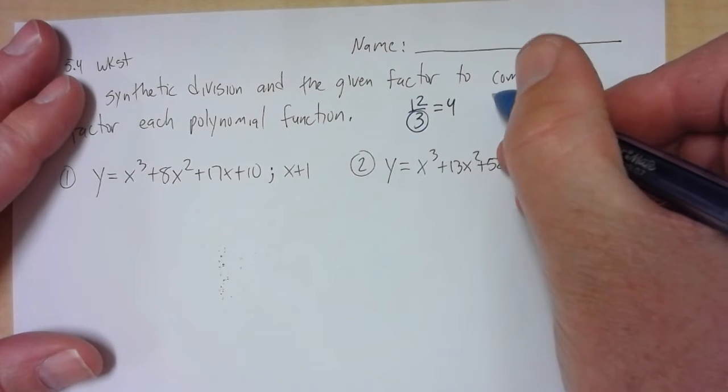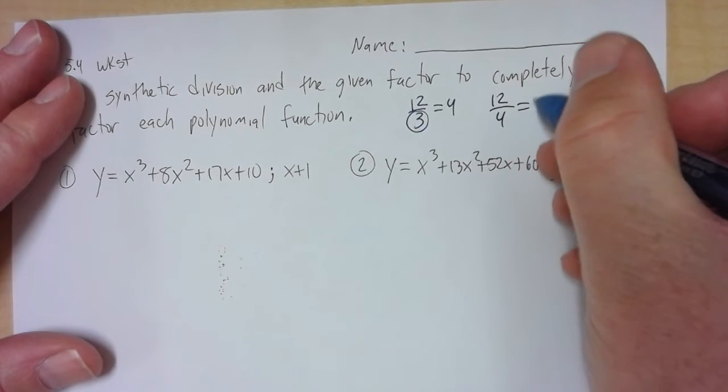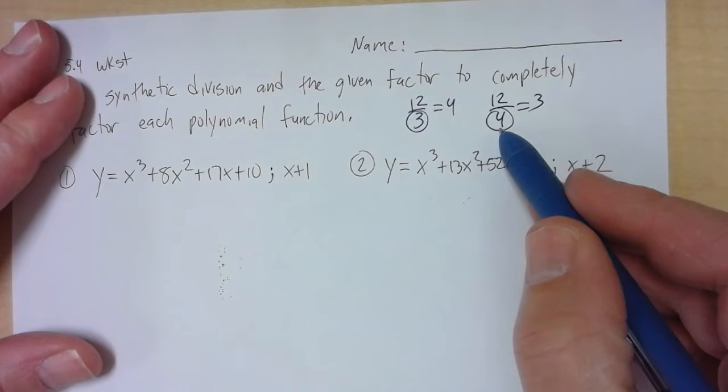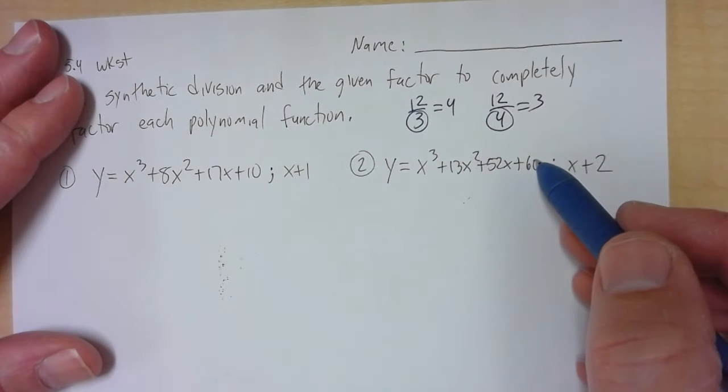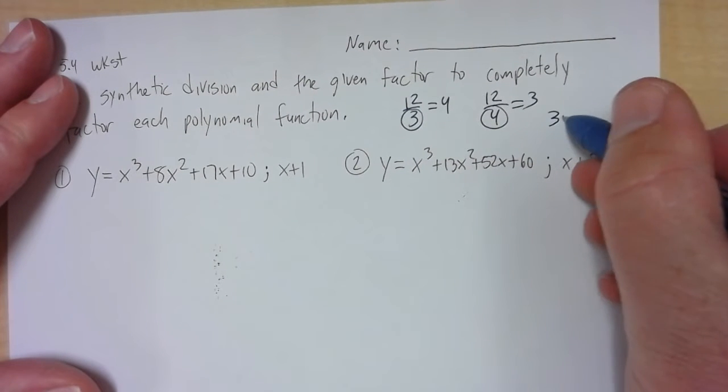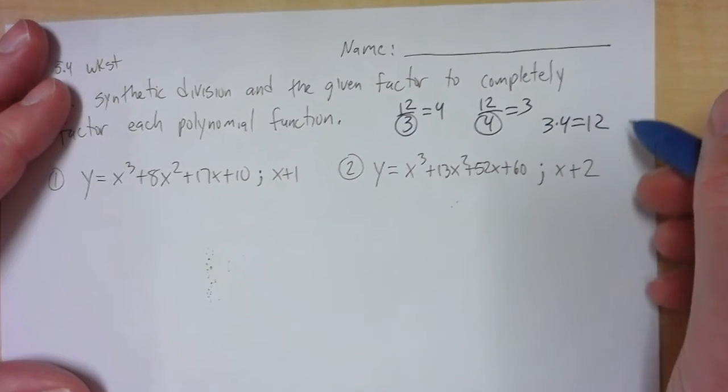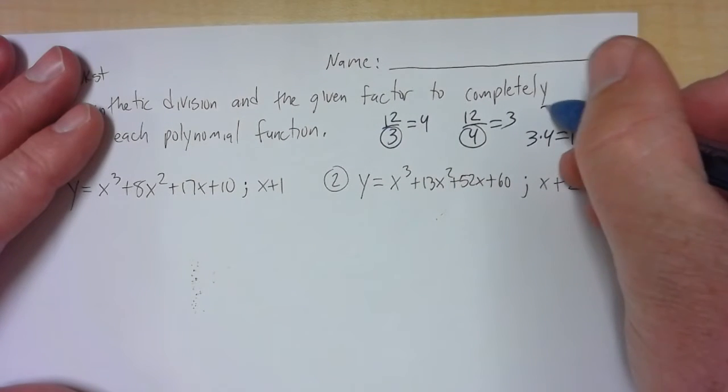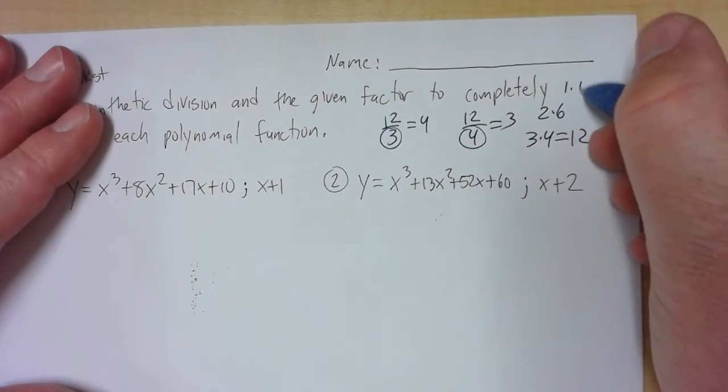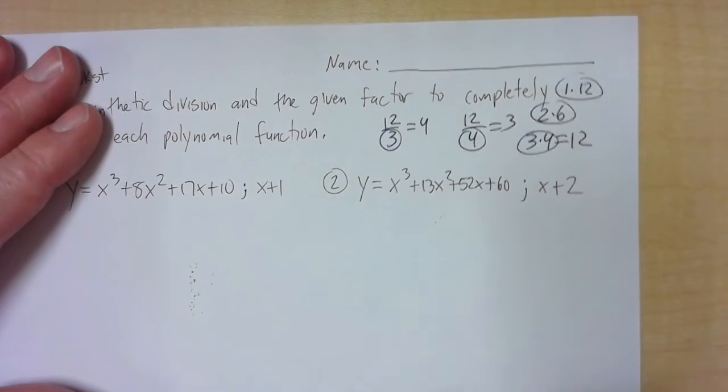Likewise, 12 divided by 4 is equal to 3. So 4 is a factor of 12 as well. And it makes sense because 3 times 4 is equal to 12. 12 has multiple factors, also 2 times 6 and 1 times 12. So all of these are factors of 12.